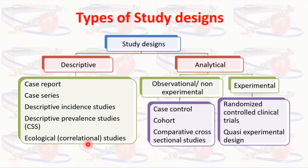Analytical studies are of two types: observational and experimental. In observational studies, the researcher mainly observes what is happening or what has happened in the past and tries to draw conclusions based on these observations. Observational study designs are used for generating or testing the hypothesis, and case-control studies, cohort studies, and comparative cross-sectional studies are examples of observational studies.